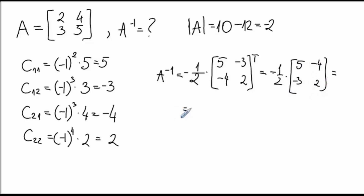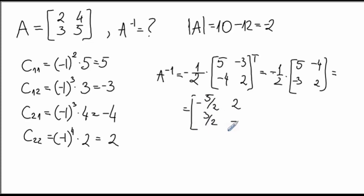For completion, let's multiply each entry. Multiplication by a scalar means multiply every entry in the matrix. And there you go — this is your inverse matrix.